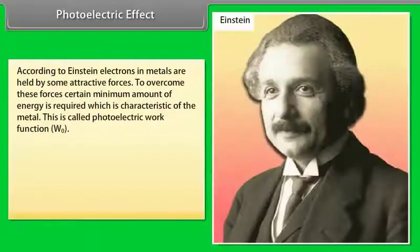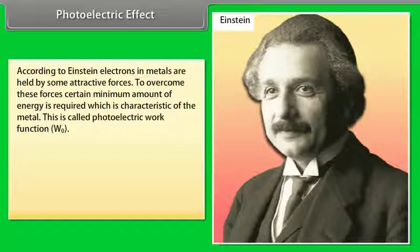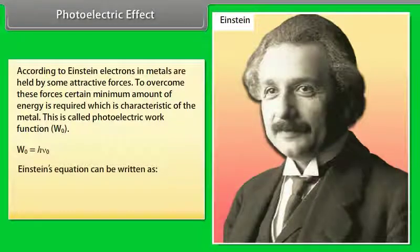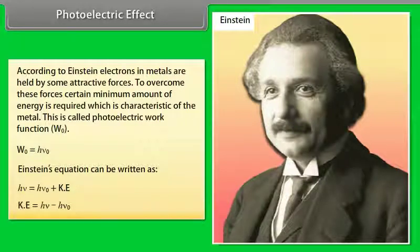According to Einstein, electrons in metals are held by attractive forces; a certain minimum energy called the photoelectric work function W₀ is required to overcome these forces: W₀ = hν₀. Einstein's equation: hν = hν₀ + KE, therefore KE = hν − hν₀.